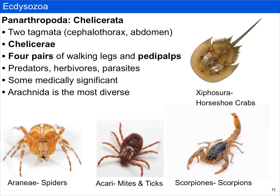Chelicerates include many familiar groups like spiders, mites, ticks, and scorpions, but also organisms you may have seen for the first time in lab, like horseshoe crabs. They have two tagmata: a cephalothorax and an abdomen. There are specialized feeding appendages called chelicerae — in spiders, the chelicerae bear a poisonous venom gland and fang. They also have four pairs of walking legs and pedipalps. Mites and ticks occasionally have only six legs, but in general chelicerates have four pairs of walking legs and one pair of pedipalps. They can be predators, herbivores, or parasites, and many are medically significant, such as mites and ticks. Arachnids are the most diverse group within chelicerates.